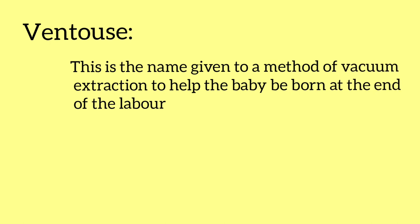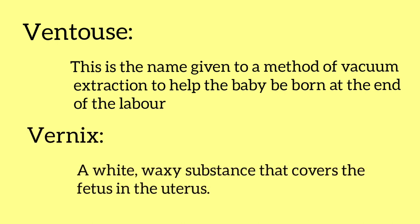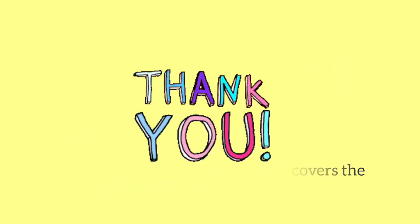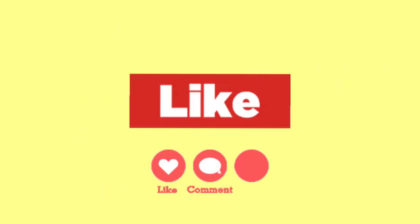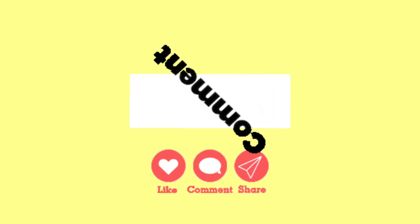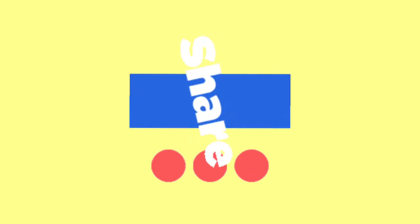Ventouse is the name given to the method of vacuum extraction used to help the baby be born at the end of labor. Vernix is the white waxy substance that covers the fetus in the uterus. Thank you so much for watching this video — please do like, comment, and share.